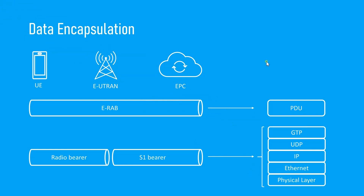Before calculating the transport network overhead, let's examine how the transport layer helps the UE carry data from UE to the core network. Basically, the transport network creates a pipe from UE to the core network. Something has to carry these services, and that is called the Radio Access Bearer. Radio Access Bearer is a virtual concept — it carries the UE's data or signal from UE to the core network via radio access networks. Each service or group of services has been allocated a different kind of RAB.